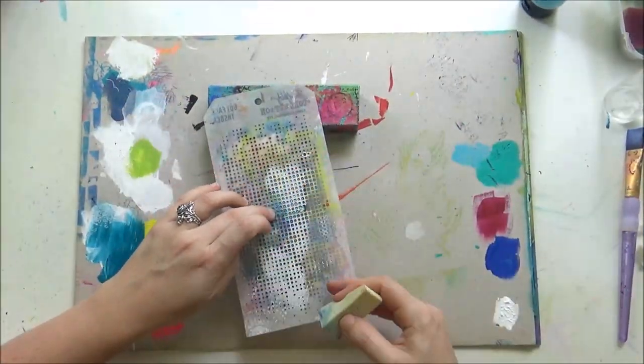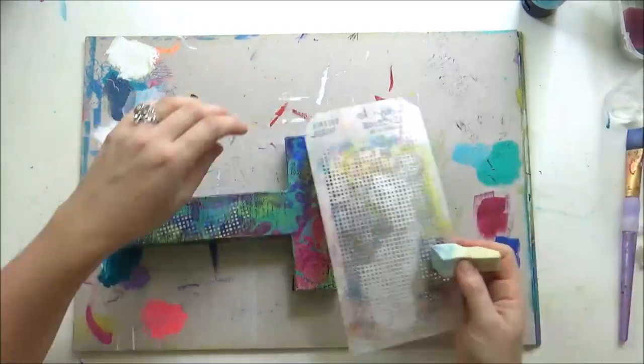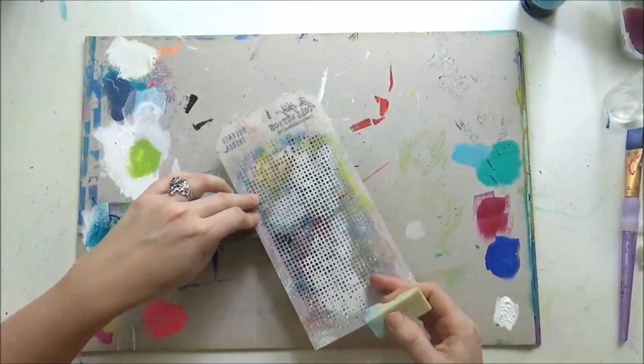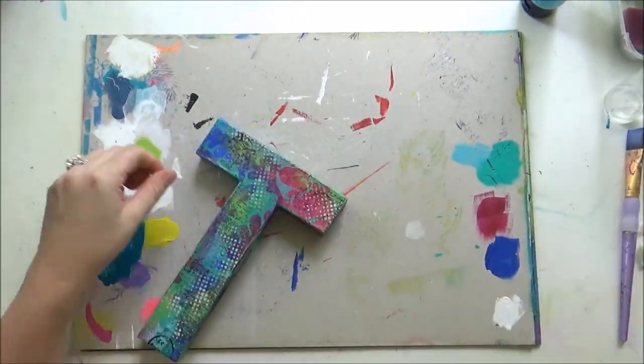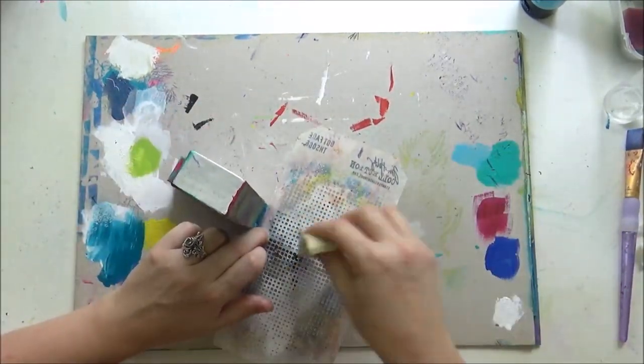Now I'm going to use my dot fade stencil just to add a little bit of a pop of color with some white gesso, so it pops and it's quite opaque at the same time. I've used this technique on one of the other letters so it will tie in with the others.